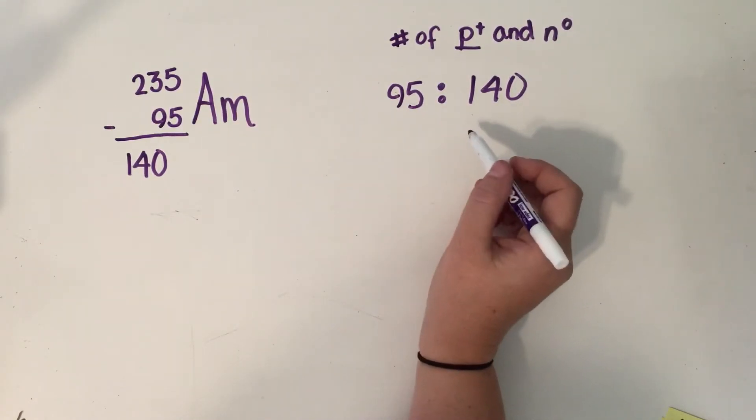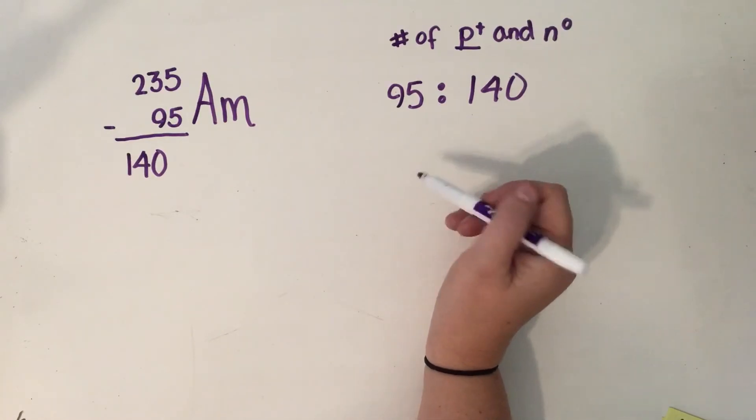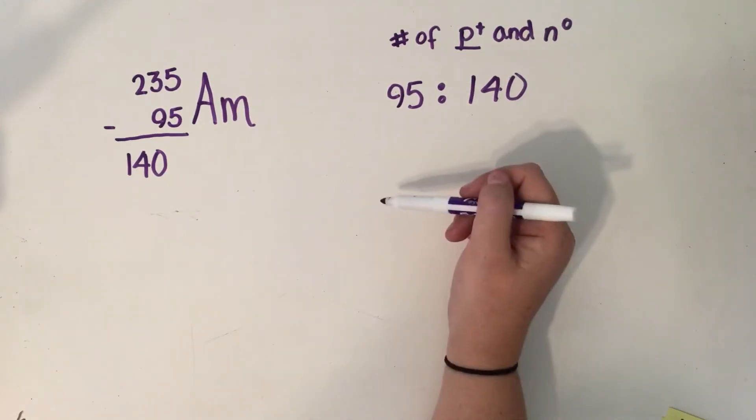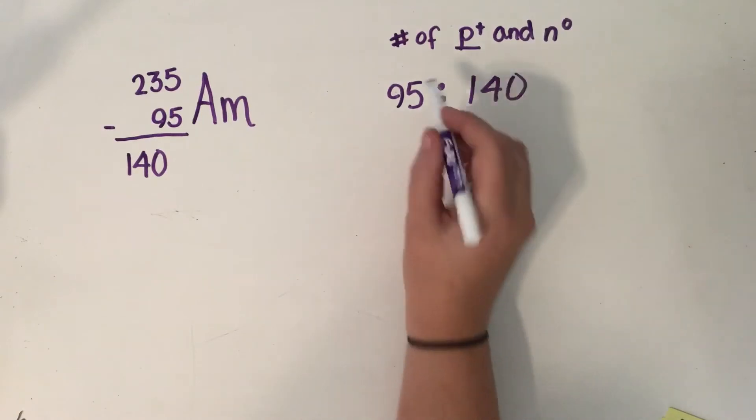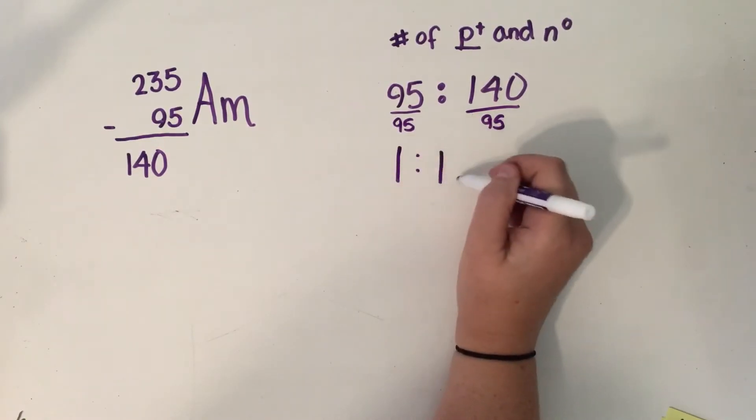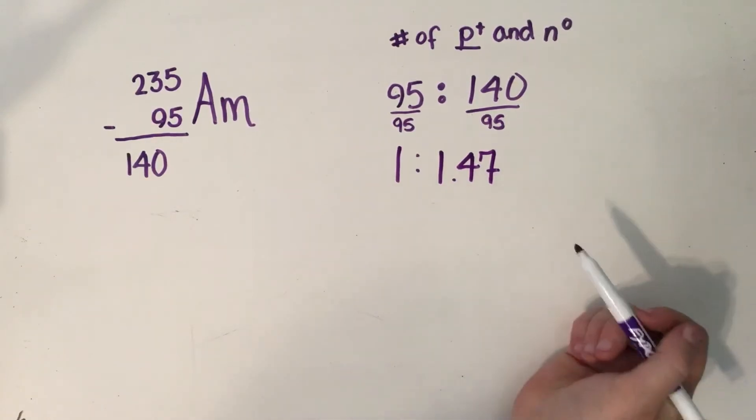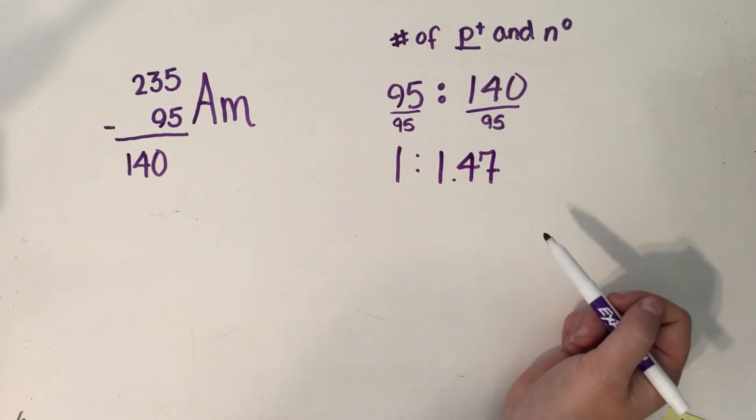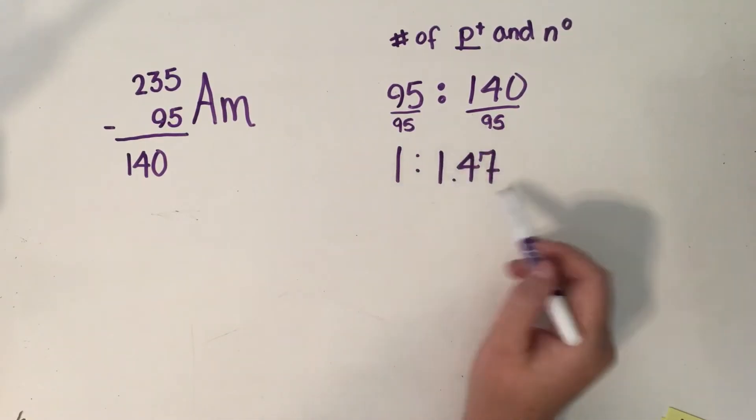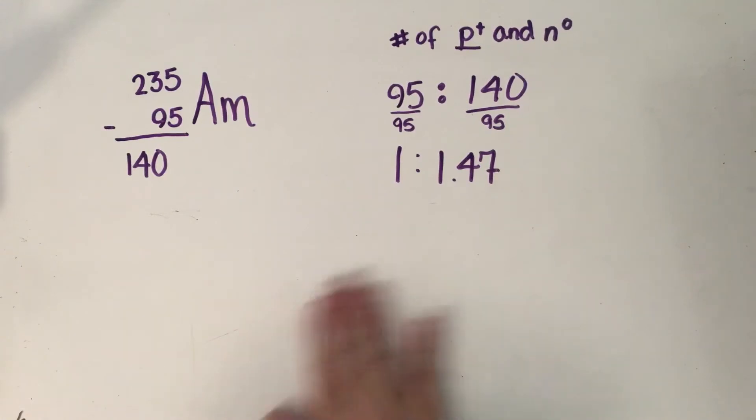The other thing we could look at very easily is whether these are odd and even numbers. Remember, even numbers are more stable. So 140 neutrons, that helps, but because we have 95 protons, that's an odd number. So again, two strikes, not stable. The other thing we could consider after we look at those two is this actual ratio. If we divide each of these numbers by 95, we get a 1 to 1.47 proton to neutron ratio, which would actually fall in an appropriate spot of the band of stability. This is a heavy nucleus, so we would be wanting to be close to the 1 to 1.5 ratio. But since the ratio was the only thing that this had going on in terms of stability, we would still say this is probably not going to be a stable isotope.